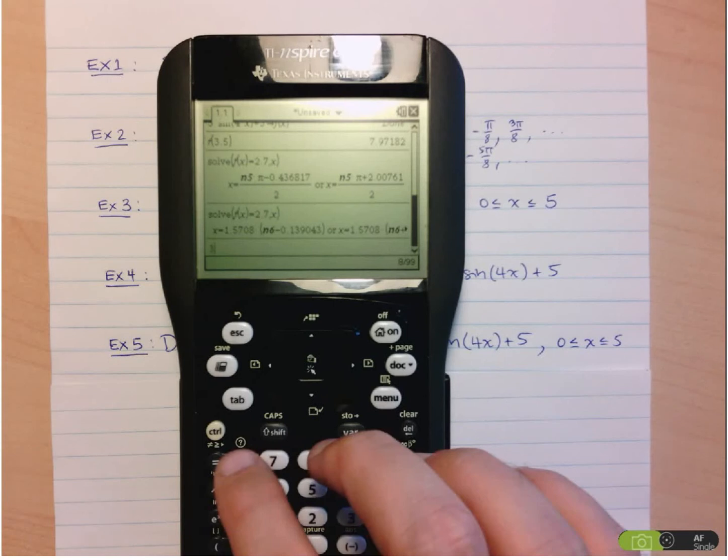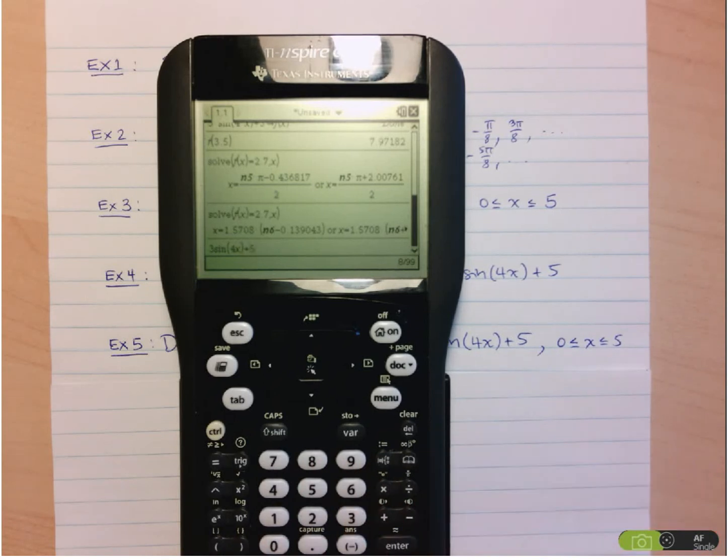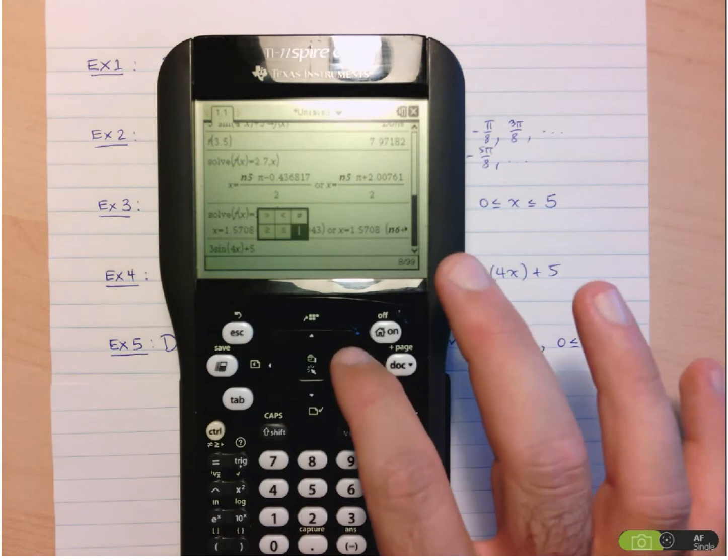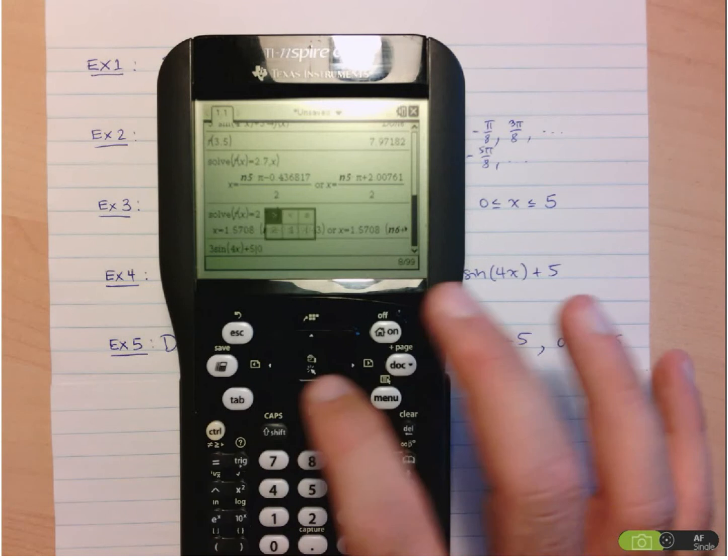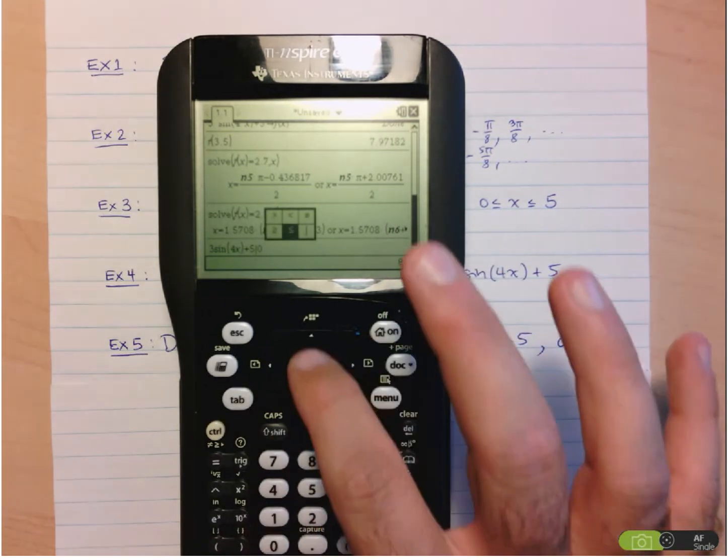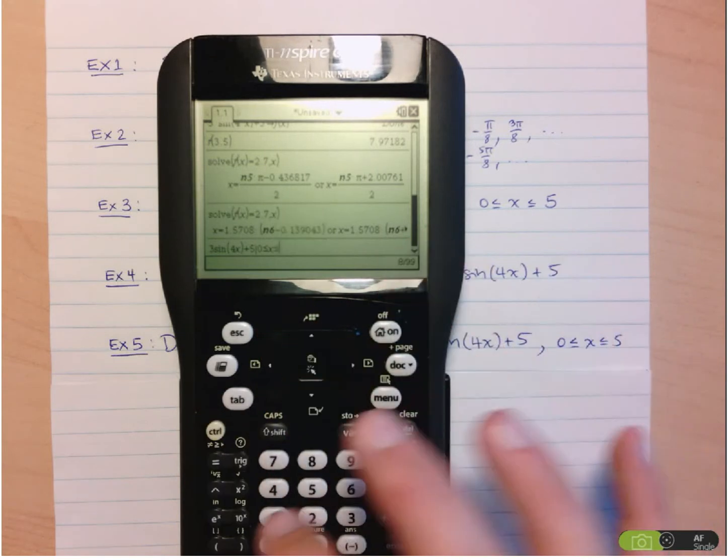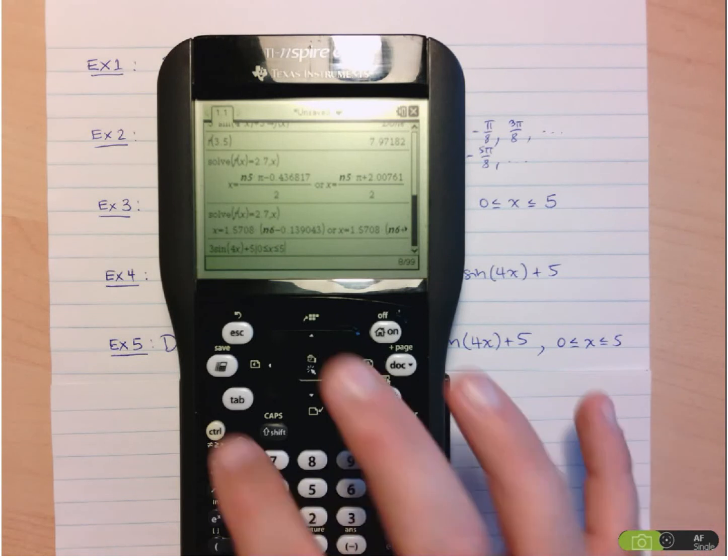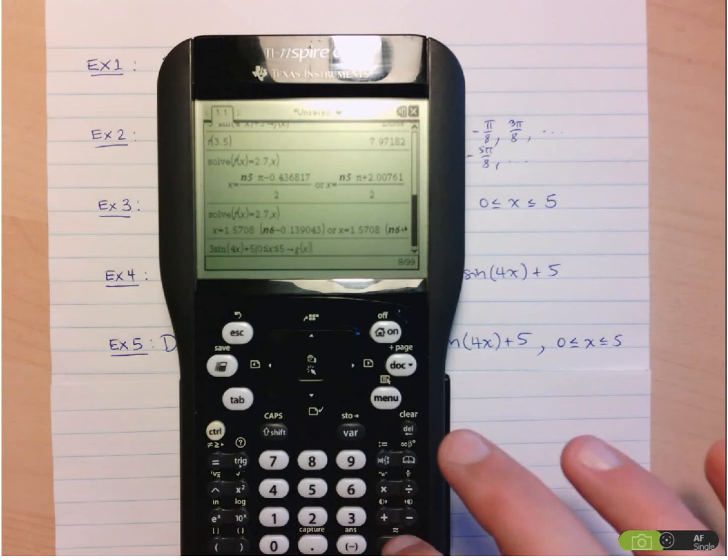So let's put in the function 3 sine 4X plus 5. And as we did before, such that 0 is less than or equal to X, which is less than or equal to 5. And we'll define that as, say, a new function G. So control store, and we'll store that as G at X, and that's done.